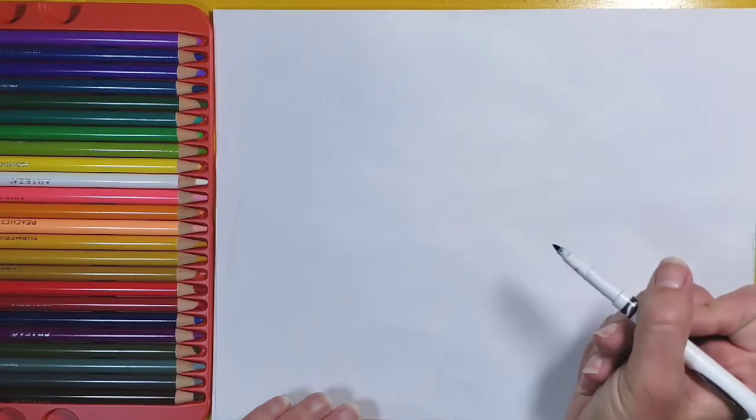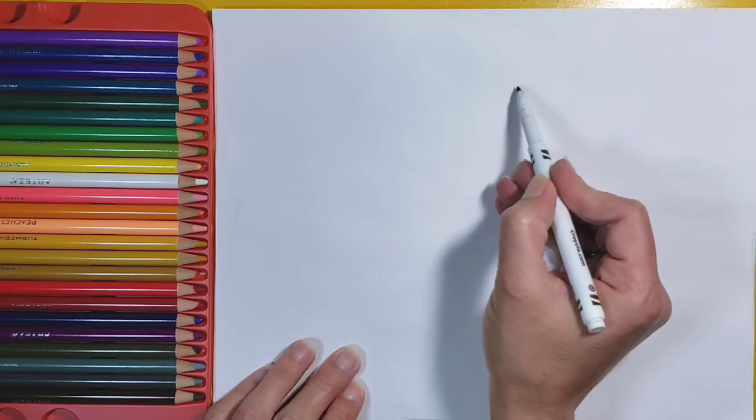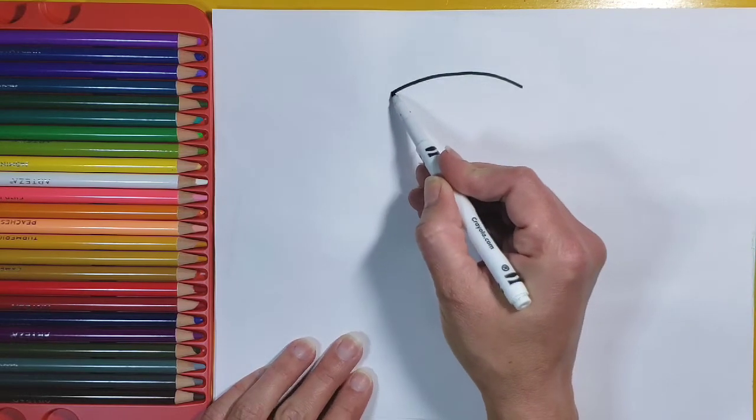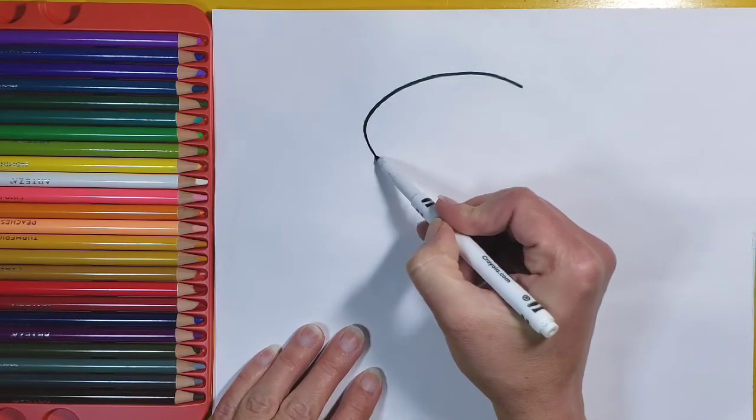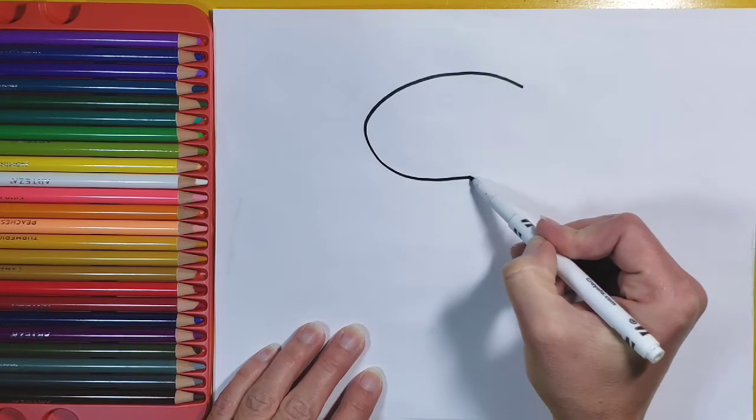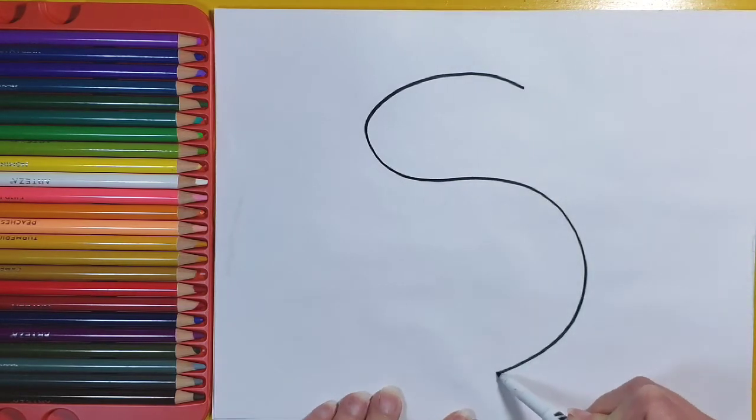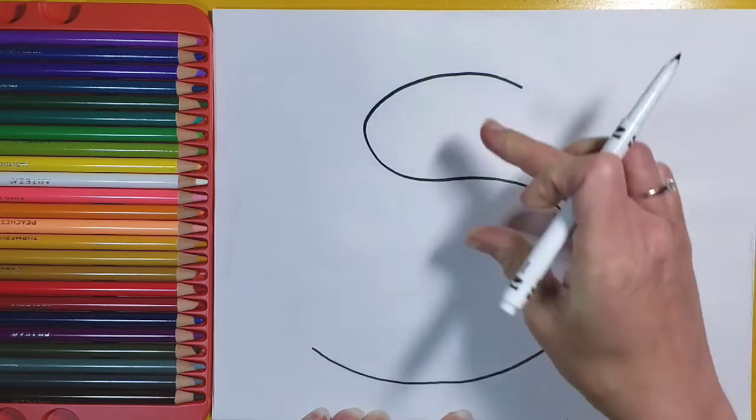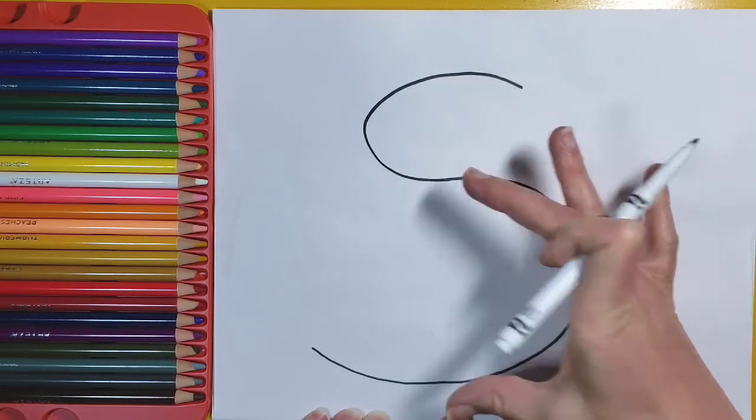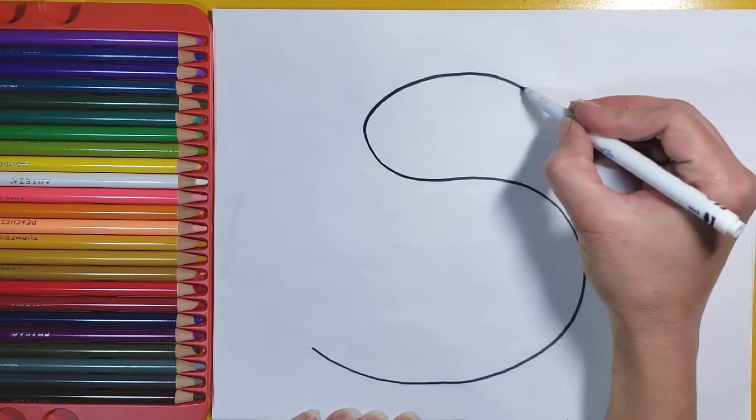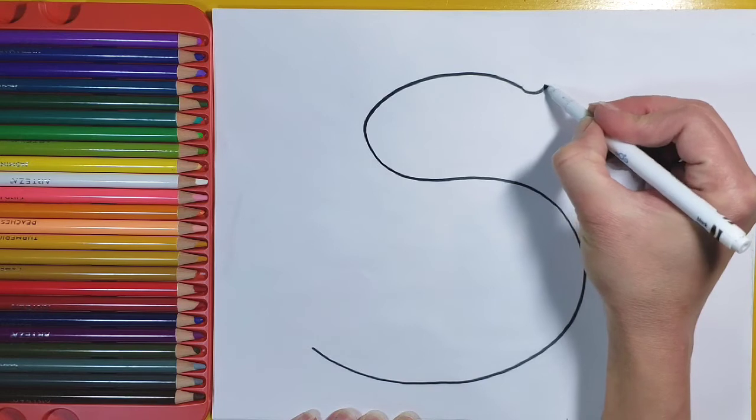I start with the letter S and I make it a little bit wide. I like to make the top part closer together and the bottom part a little bit farther away, so this distance is closer and this part is farther away. Okay, so I start off with an S.